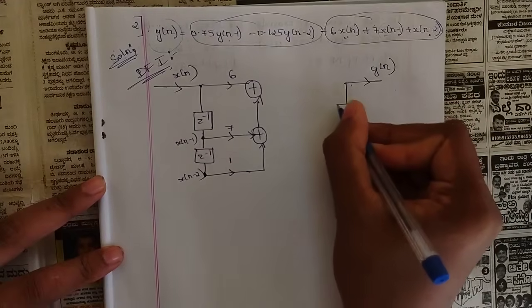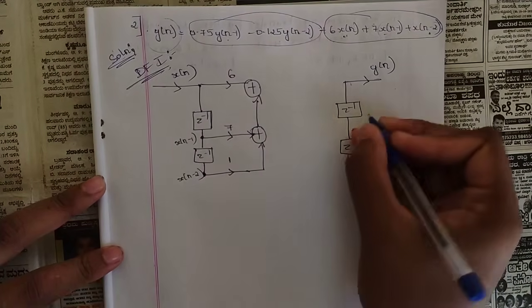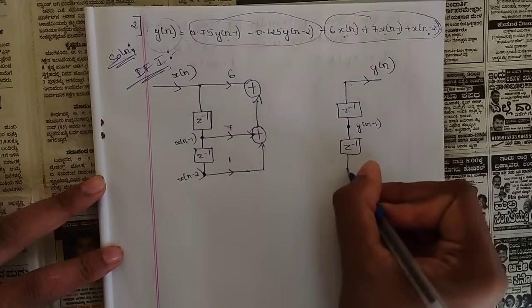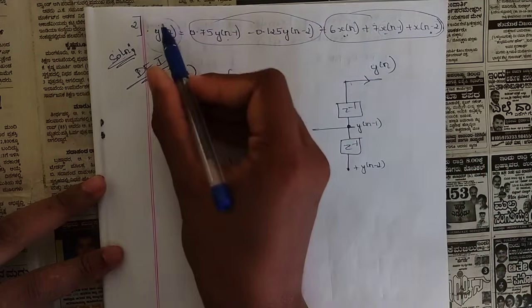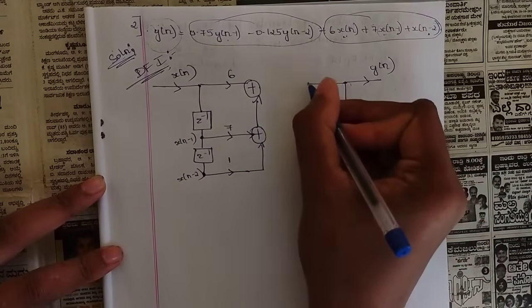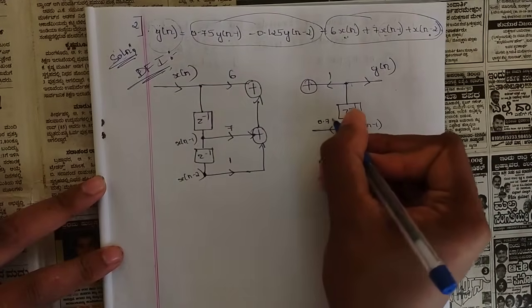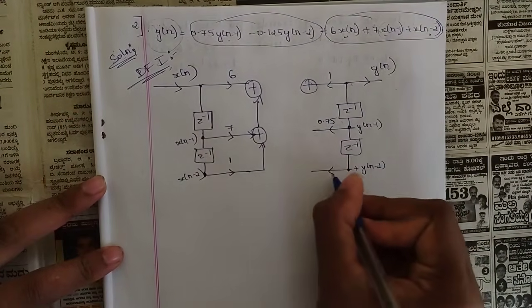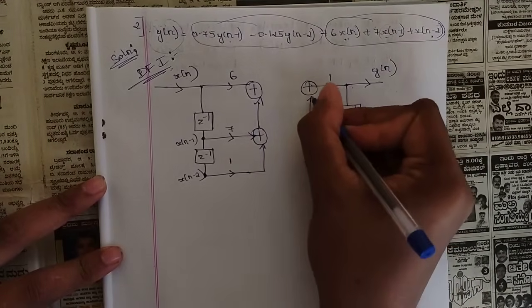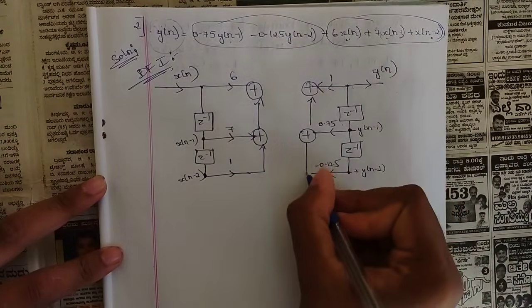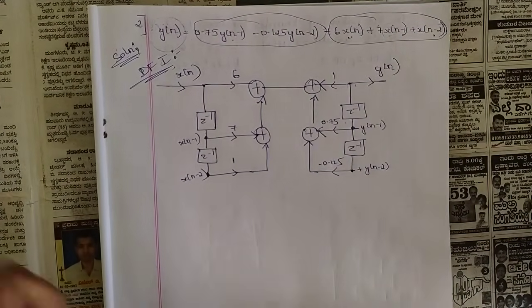Similarly, draw the output side block. The terms are y(n-1) and y(n-2), so we draw two more delays on the output side: z-inverse and z-inverse. The coefficient of y(n) is 1. The coefficient of y(n-1) is 0.75 and the coefficient of y(n-2) is minus 0.125. One more summer is added and the branches are joined together. This completes the DF1 structure for this system function.